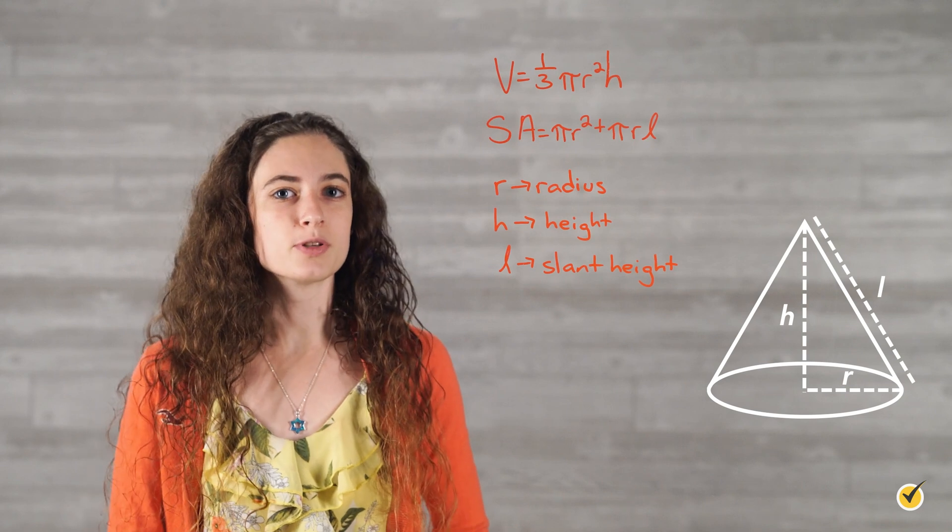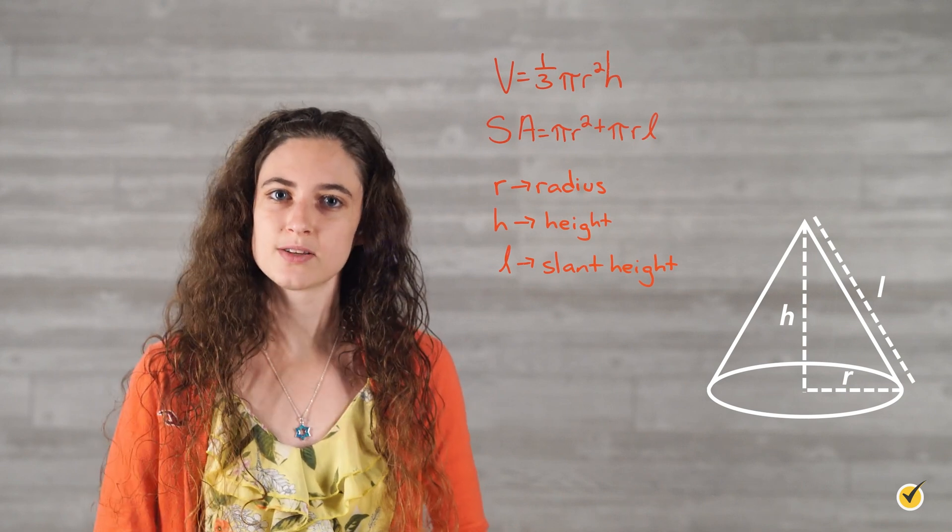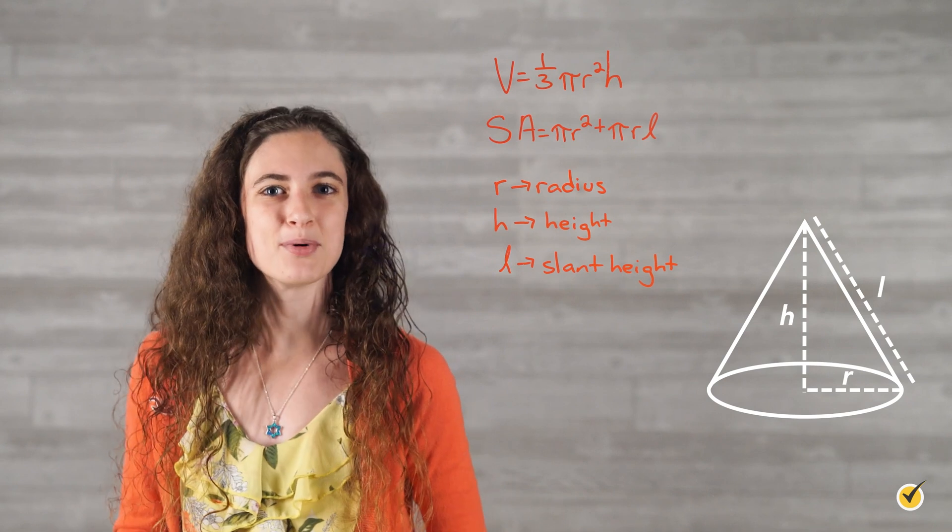To solve the volume and surface area equations, we'd simply plug a cone's measurements into their respective variables. Let's try a quick example. Say we have a cone whose base radius measures 3 units, height measures 4 units, and slant height measures 5 units.